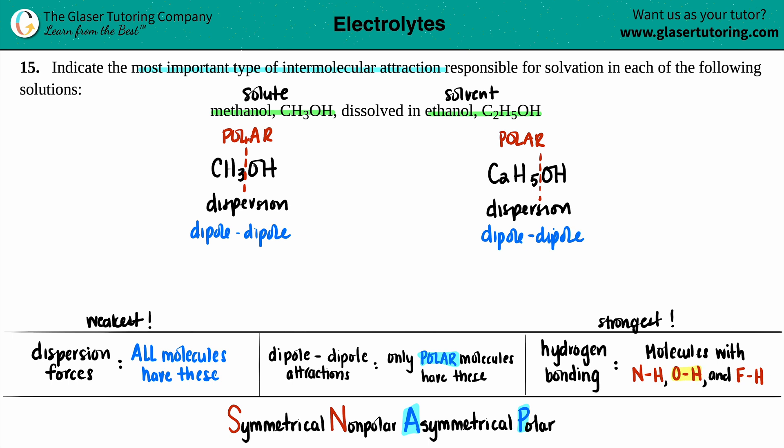In methanol, there's an OH. And for ethanol, there's an OH. So they both have hydrogen bonding. Hydrogen bonding. And the OH is also hydrogen bonding.